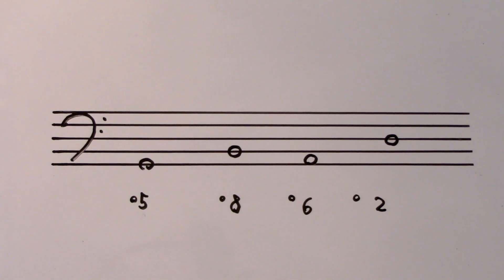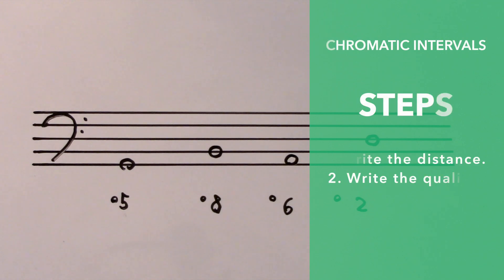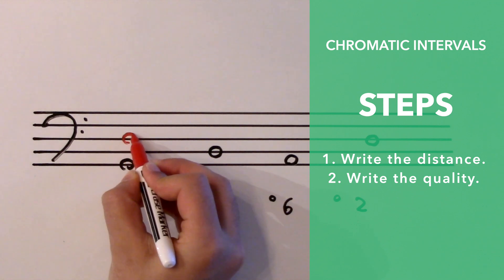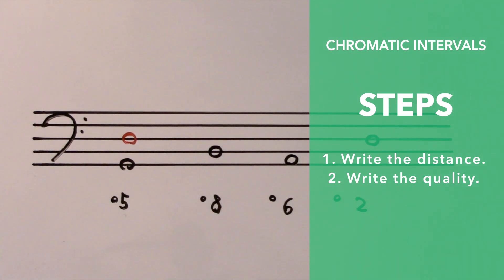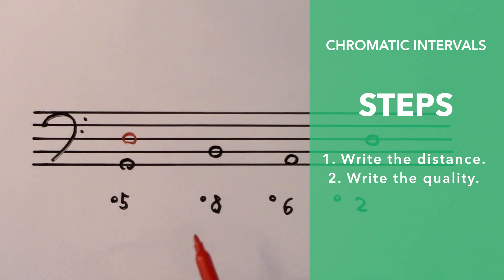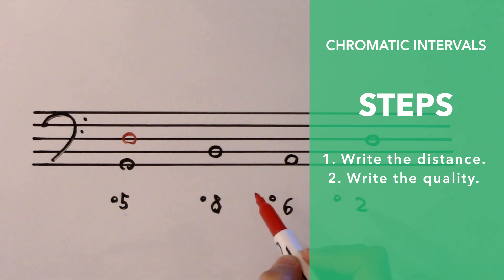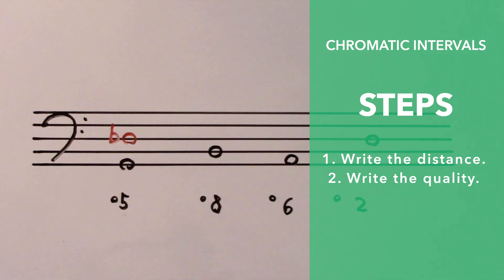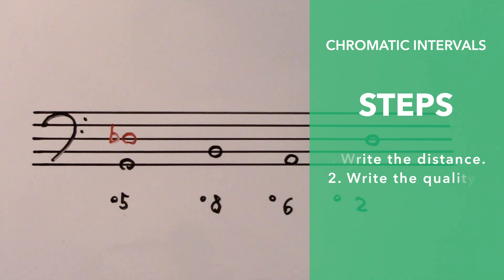A diminished fifth above G. Step one is to write a fifth above G — the fifth note of a G major scale is D. So this right now is a perfect fifth. Diminished means slightly smaller, so I have to reduce the distance. I can't change the bottom note, so I'll alter the top note. By writing a flat beside it, that sends D down one semitone — now this is a diminished fifth.